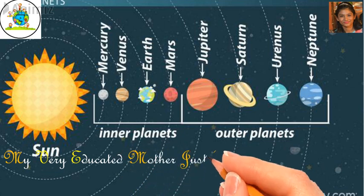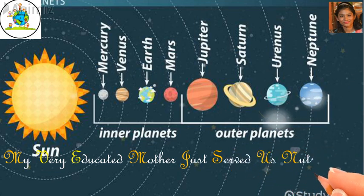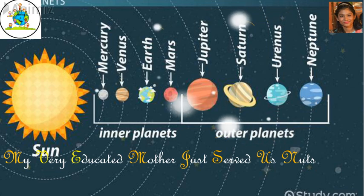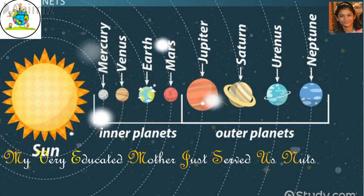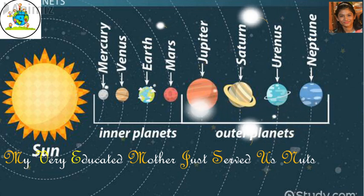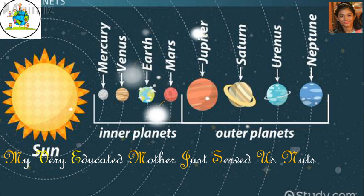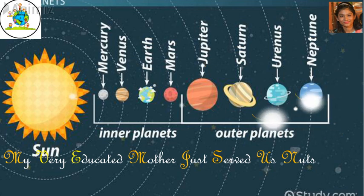You can see a sentence written. This sentence is the easy way to learn the names of the planets. Here we can see: My, M for Mercury, Very, V for Venus, Educated, E for Earth, Mother, M for Mars, Just, J for Jupiter, Served, S for Saturn, Us, U for Uranus, Nuts, N for Neptune. So, it is an easy way to learn.